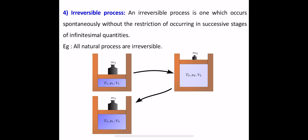Next is the irreversible process. Here, if the transfer of temperature, pressure, or volume takes place — whether increased or decreased — it cannot come back to the initial state. The process continues but is not reversible to the initial state. An irreversible process is one which occurs spontaneously without the restriction of occurring in successive stages of infinitesimal quantities.